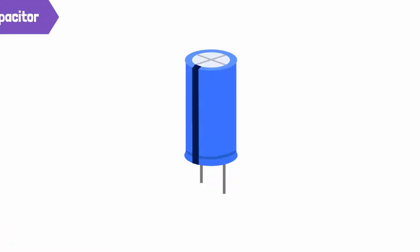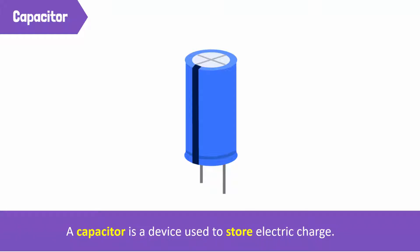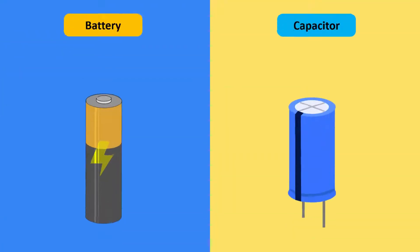Next, we have the capacitor. A capacitor stores electric charges. A capacitor is a bit like a battery, but it has a different job to do.